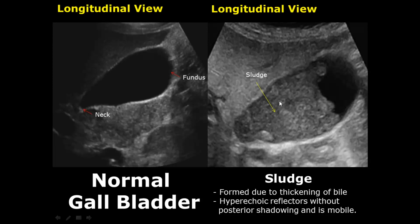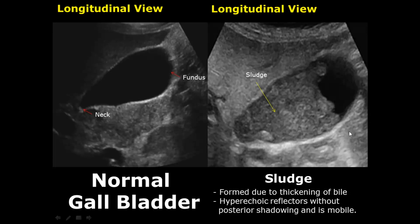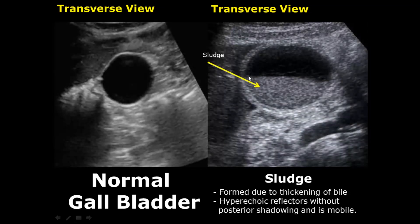Gallbladder sludge is the thickened form of bile. It has increased density, which is why it appears hyperechoic without any posterior shadowing, and it is mobile — when the patient shifts position, the sludge will also change its position. Here is a transverse image of the gallbladder showing sludge, which is hyperechoic due to thickening of bile.